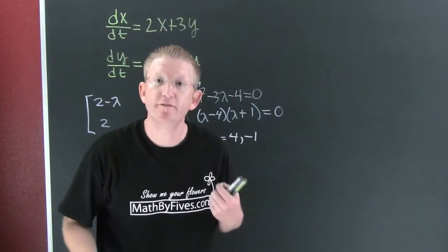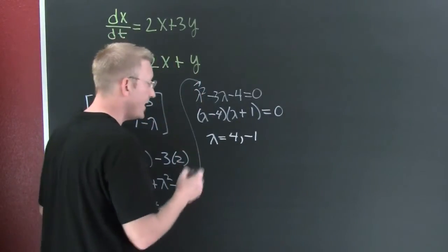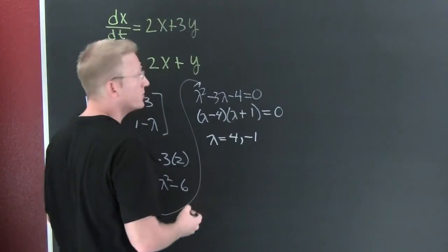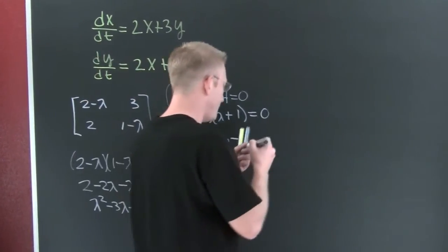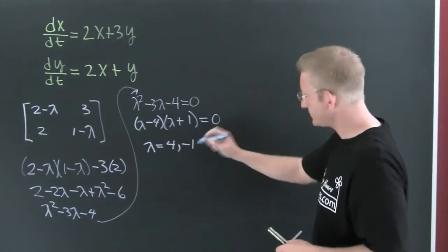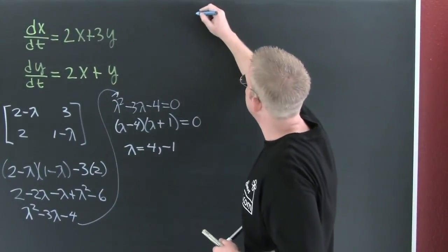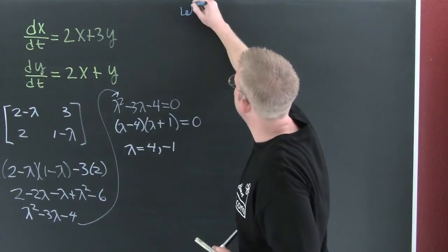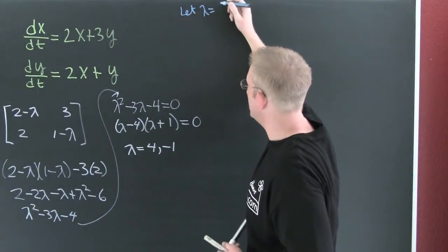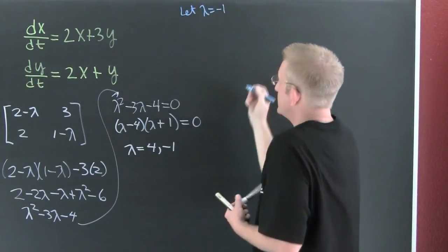Now we got to go get our vectors. Getting our vectors, first we'll choose a lambda. I'll take it up here and put it in a different color. I'm going to let lambda equal minus one first.